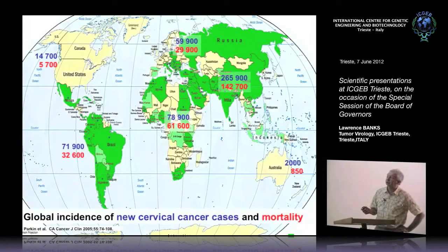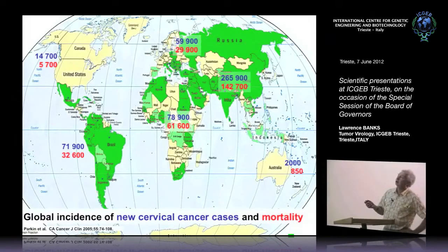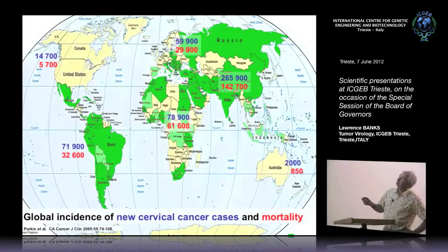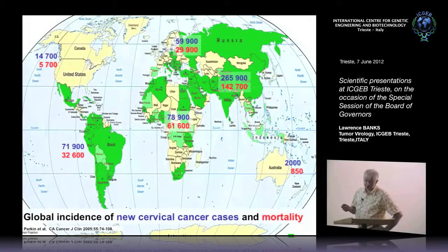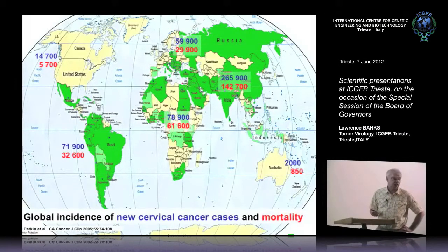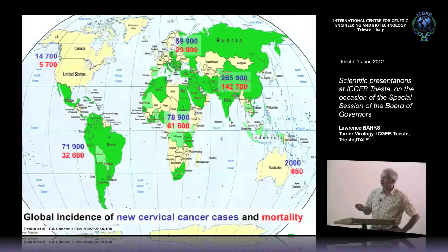The distribution of cervical cancer is global, but it's a particularly devastating problem within developing countries. This just shows you the global distribution of the disease overlaid on the map of the ICGB member states. As you can see, it's a particularly devastating problem within Southeast Asia, but also within many parts of Africa and also in South America. And it's important to remember that in many of these countries, cervical cancer is the major cause of cancer-related death in women.